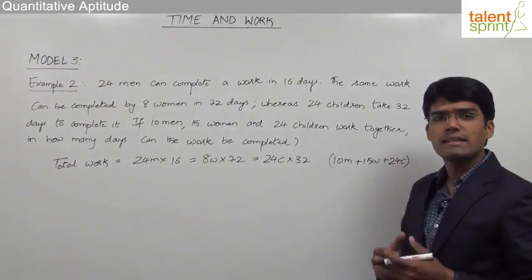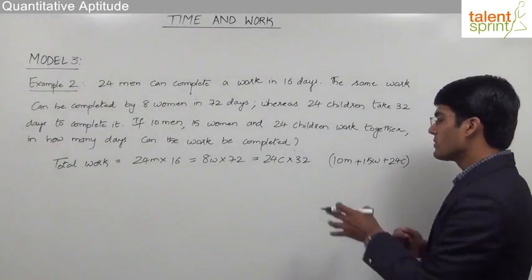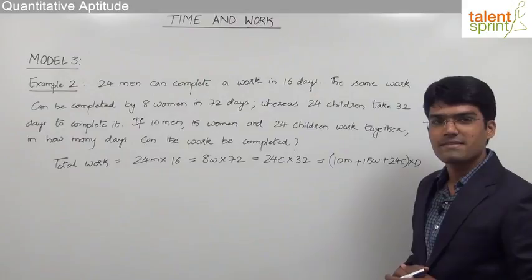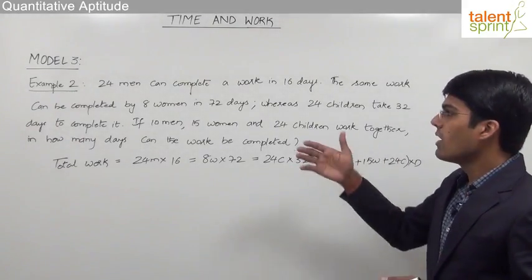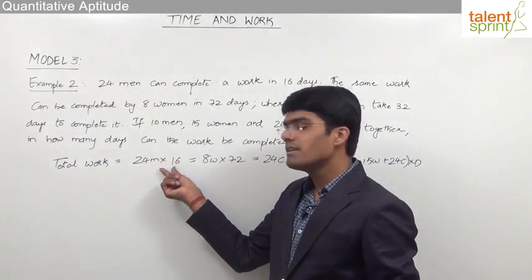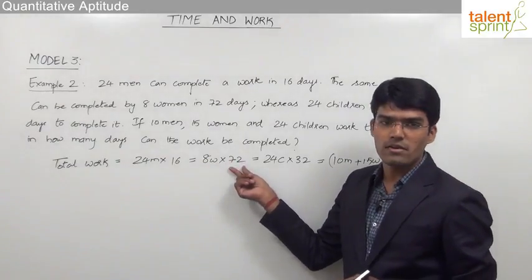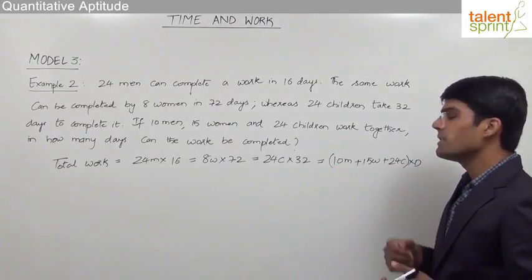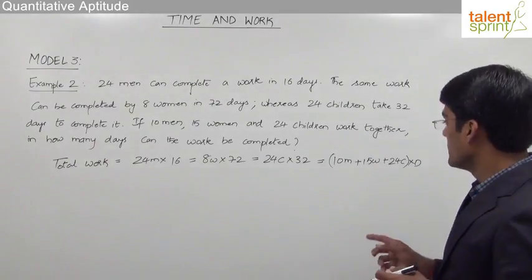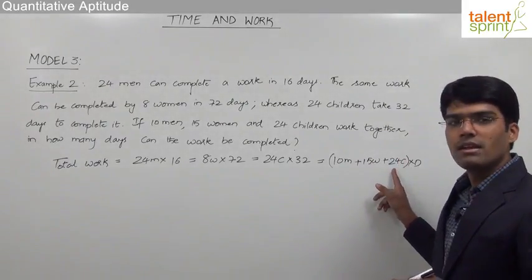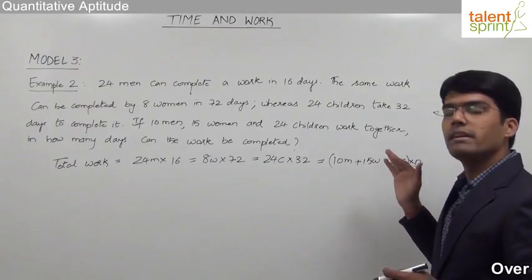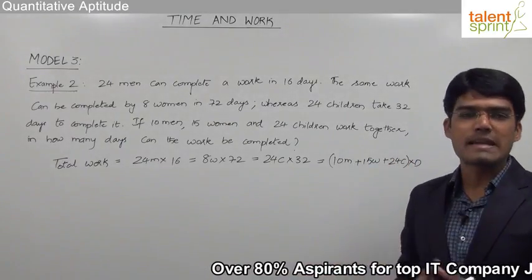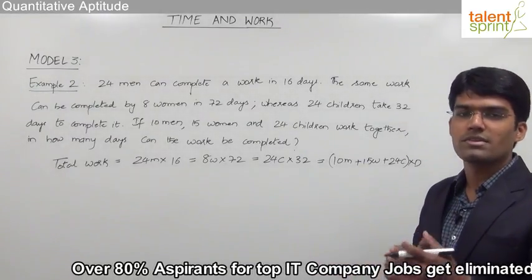Assume the number of days required by this group is D. So (10 men + 15 women + 24 children) × D equals the total work. To solve this, we need to convert the women and children into terms of men — or convert everyone into one type — so we can balance the work on both sides in a simple manner. We first establish the relationship between the different types of persons.